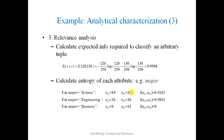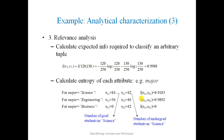To count the entropy value, we first compute S1j and S2j. For the 'major' attribute: in Science, there are 84 graduate students and 42 undergraduate students. The information value for Science major is 0.9183, for Engineering it is 0.9892, and for Business it is zero — since the number of undergraduate students in Business is 42 and graduate students is zero.